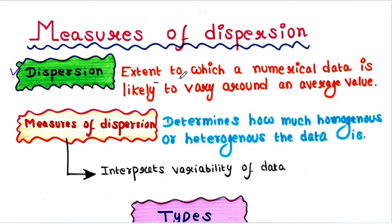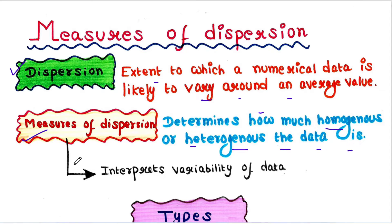In statistics, dispersion is the extent to which numerical data is likely to vary around an average. The measures of dispersion show how scattered the numerical data is. It can be stated that measures of dispersion determine how much homogeneous or heterogeneous the data is, so it helps us interpret the variability of data.